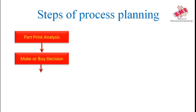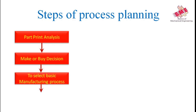The second step is make or buy decision. After part print analysis, the process engineer decides whether to manufacture the part in-house or buy it from another industry, because some parts are easily available from vendors at low cost. Some difficult parts require more time for manufacturing. The process engineer also decides whether the required machinery is available or needs to be purchased, and whether buying from another industry at mass production pricing would reduce cost.